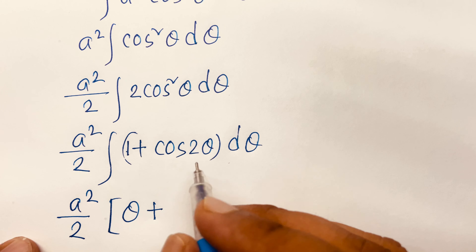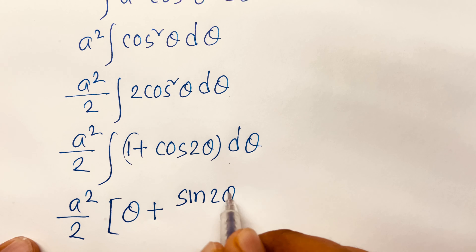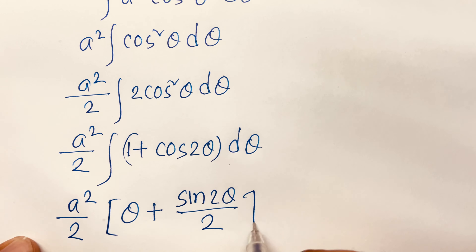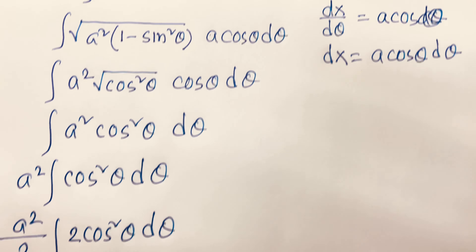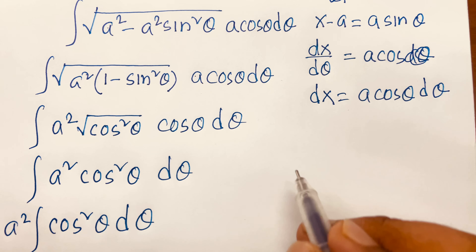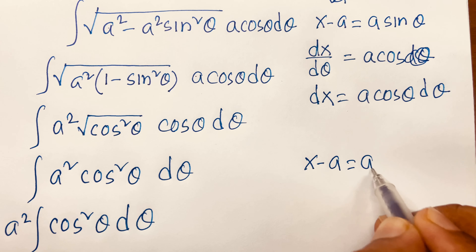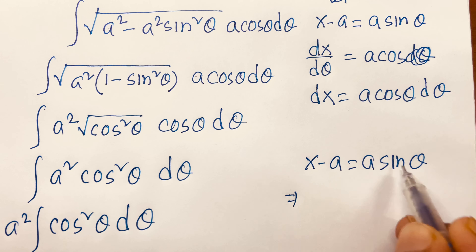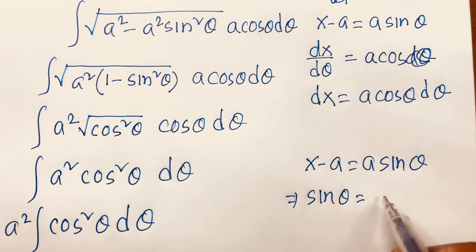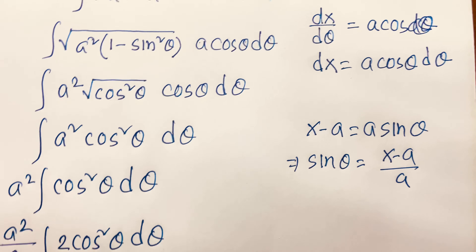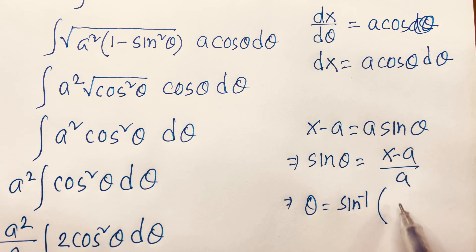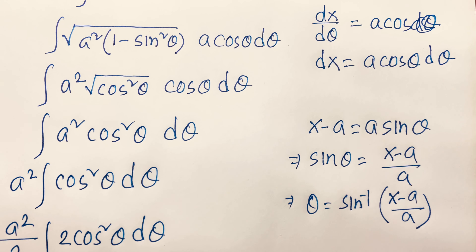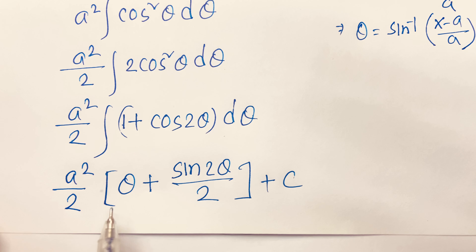Then I have a² ∫cos²θ dθ. Since a² is constant, I write a²/2 · ∫2cos²θ dθ. Using the trigonometric identity 2cos²θ = 1 + cos2θ, the integral becomes a²/2 · ∫(1 + cos2θ) dθ.